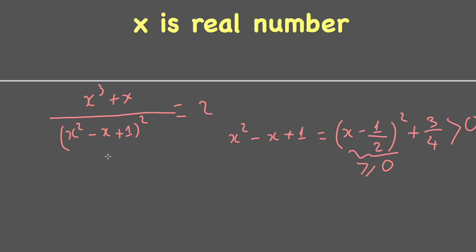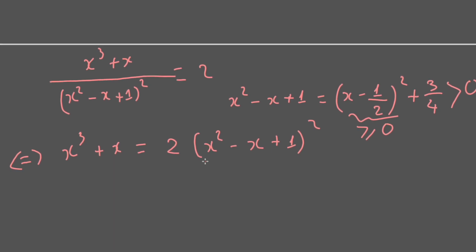So we can transform the denominator into the right side of the equation and work from there. If we try to expand this into powers of x⁴ and x³ and continue, we get a complex expression that is not easy to factorize. So we will try another approach.